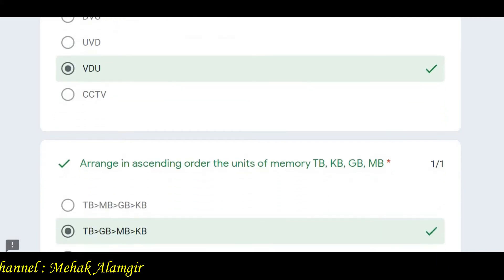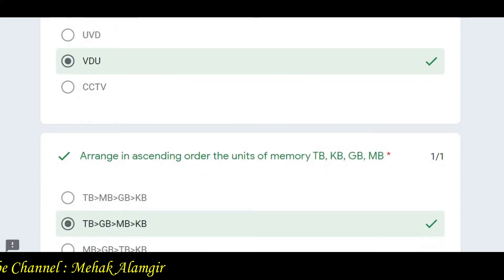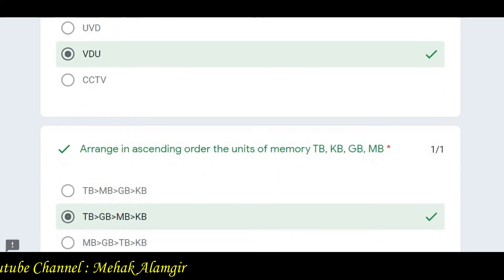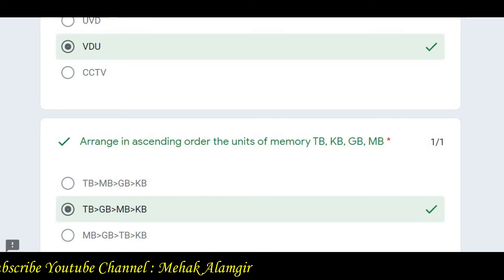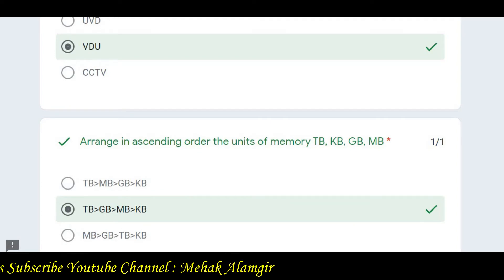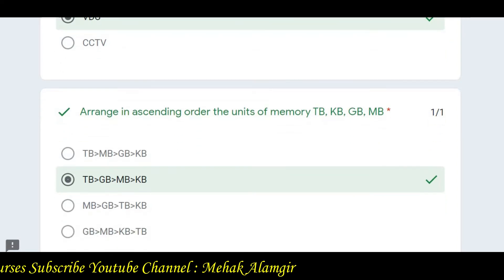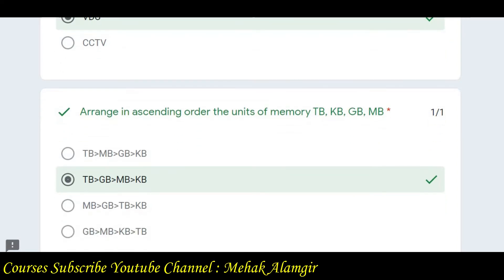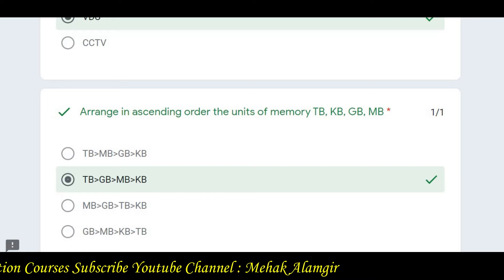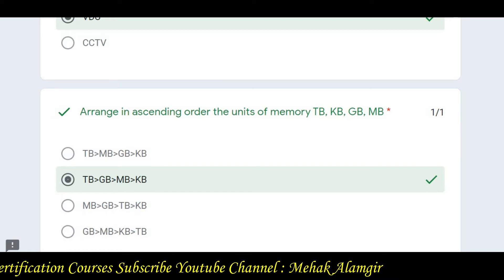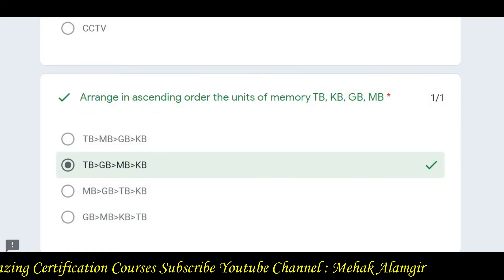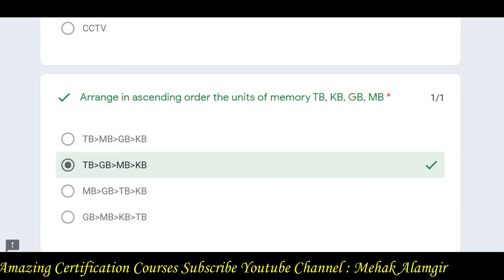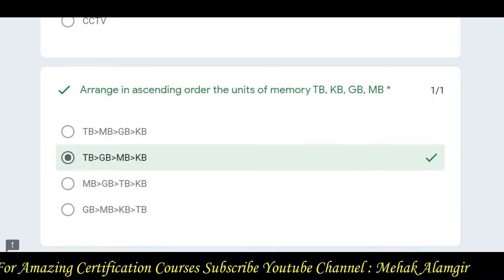Question number two: arrange in ascending order the units of memory — TB, GB, MB, KB. The correct ascending order is KB, then MB, then GB, then TB — so KB is less than MB, which is less than GB, which is less than TB.